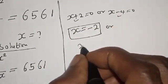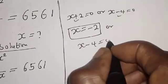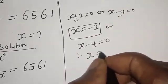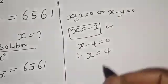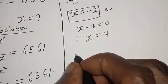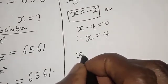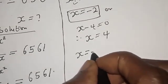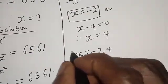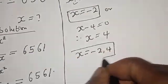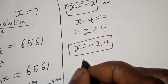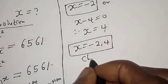Therefore s plus 2 equals zero giving s equals minus 2, or s minus 4 equals zero giving s equals 4. These are our two solutions. Let's check to confirm if our answers are right or wrong.